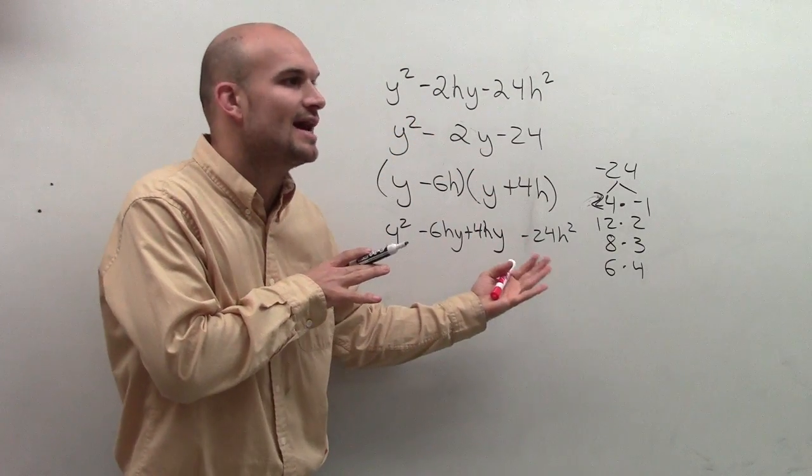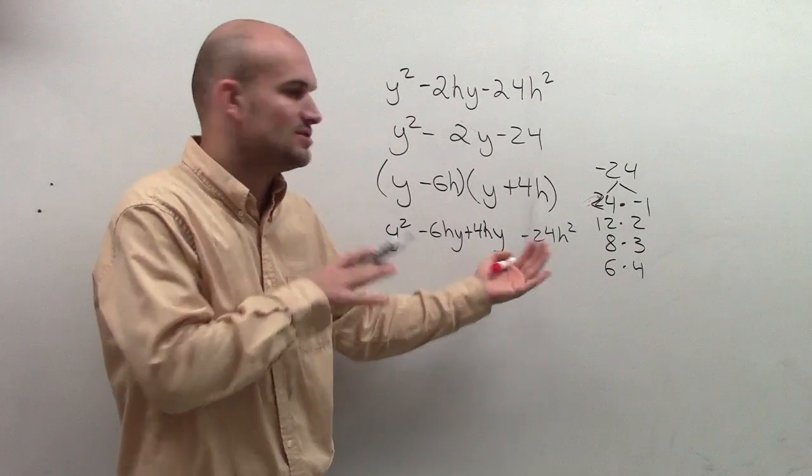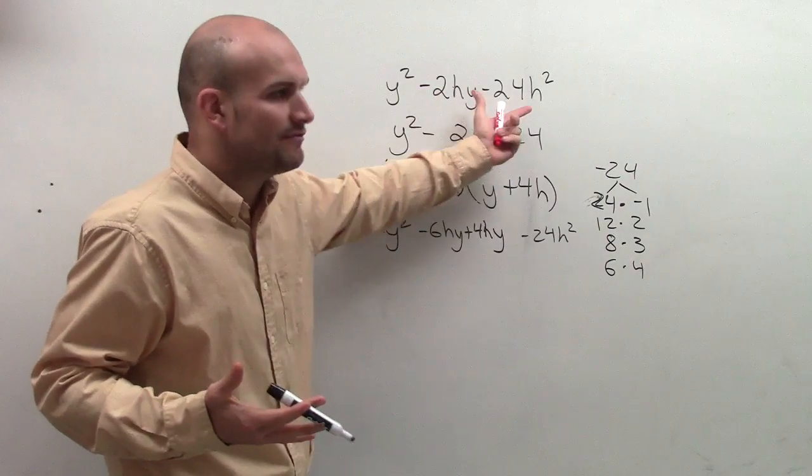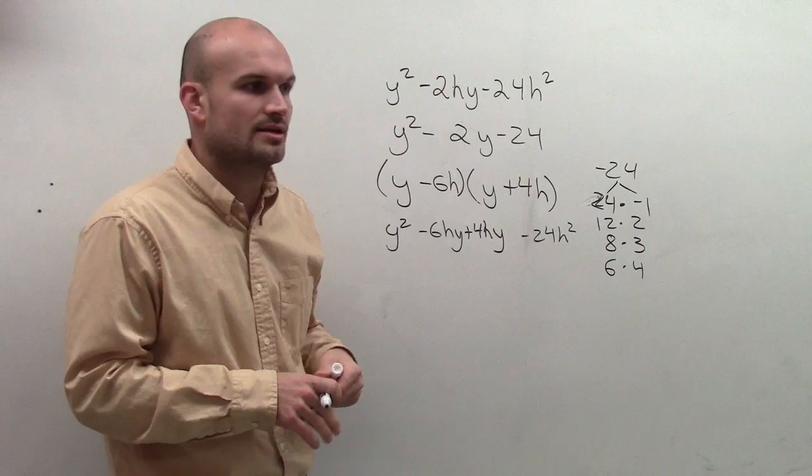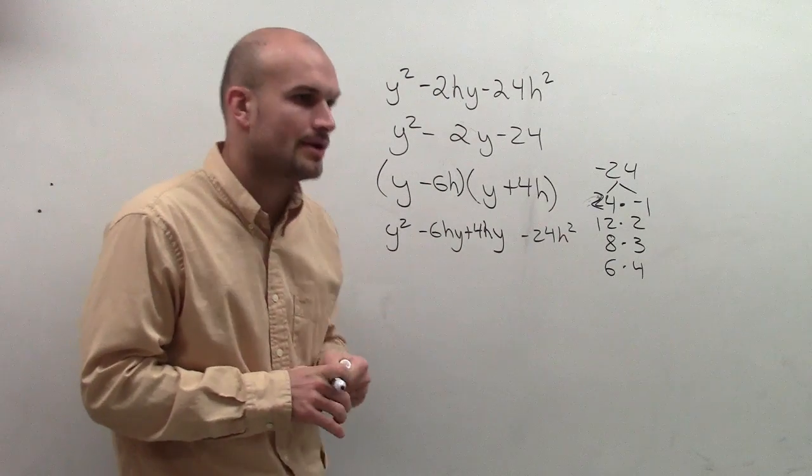So when you get a problem like this where you're going to have the middle and last terms as variables, it's really not a different factoring problem. You just need to make sure you include that variable for the second term of your binomial. That's it.